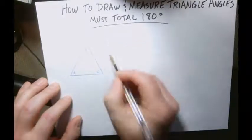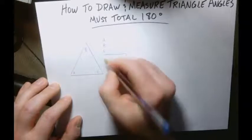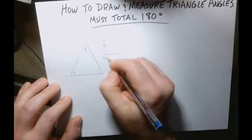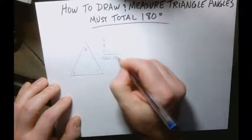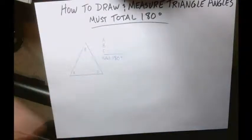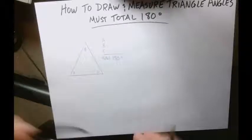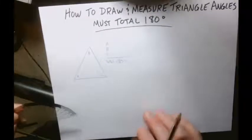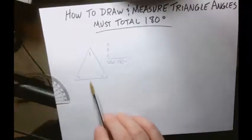And after we measure those angles, they all need to total 180 degrees. If they don't, you need to make a few adjustments. So let's see how close we can get to measuring our angles. We're going to measure angle A first.